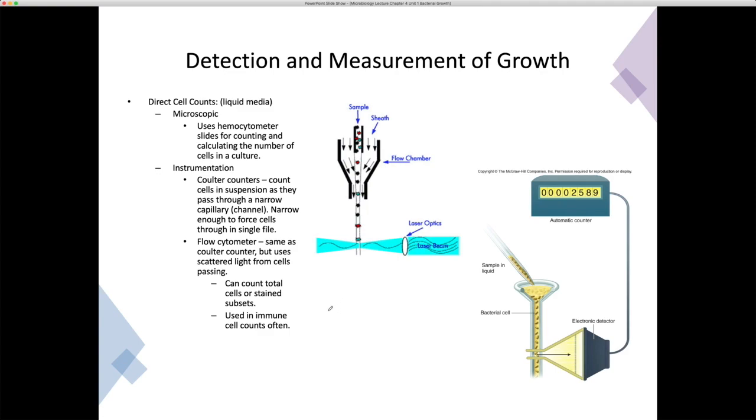We have direct detection of growth and what's called a viable count. In direct cell counts, we're going to count cells directly. The first way, probably one of the oldest, most old-fashioned ways of doing it is with a hemocytometer. This is the same type of tool that is used in blood counts, like a red blood cell count or a white cell count. You have to use some calculations and dilution factors. You literally physically count the number of cells under the microscope in a little grid, and then from there, you use the calculations to figure out how many bacteria are in a sample.